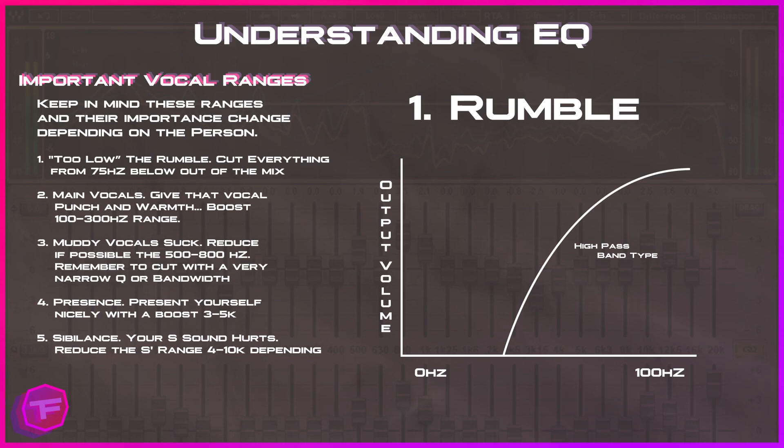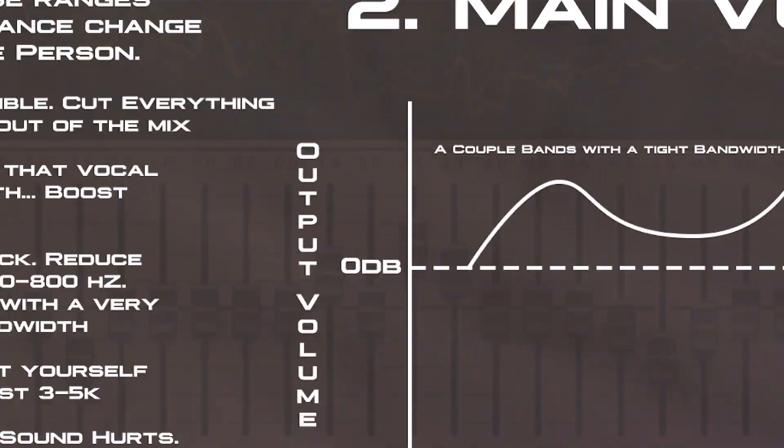Step number one: we're going to try and remove as much of that rumble as we can. The rumble range is an unnecessary frequency range for your vocals — you don't really want heavy bass in someone's ear. What we're going to do is use a high pass band type, set it around 120 Hz. As you can see on the graph, it's cutting off around 75 Hz with a nice gradual change. Set it anywhere from 100 to 150 Hz for the band placement.